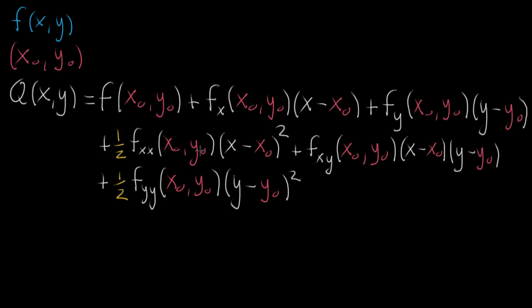We are finally ready to express the quadratic approximation of a multivariable function in vector form. I have the whole thing written out here where f is the function that we are trying to approximate, x naught y naught is the constant point about which we are approximating, and then this entire expression is the quadratic approximation, which I've talked about in past videos.